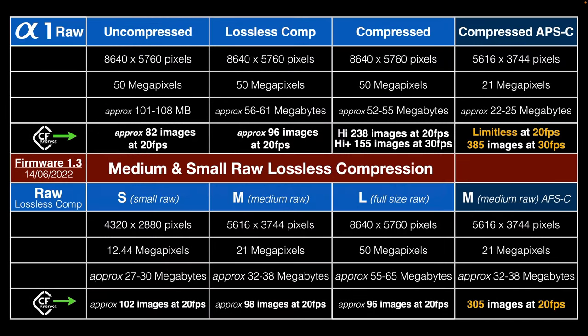This is quite a busy table, so I'll run you through what we're looking at. I have uncompressed, lossless compression, and compressed — and also a last column for compressed APS-C. The first row gives pixel dimensions, then megapixels, then approximate file size in megabytes. The next row gives the maximum frames we can record in those RAW file formats when using a CFexpress Type-A card, listed at 20 frames per second and also 30 frames per second for compressed and compressed APS-C formats.